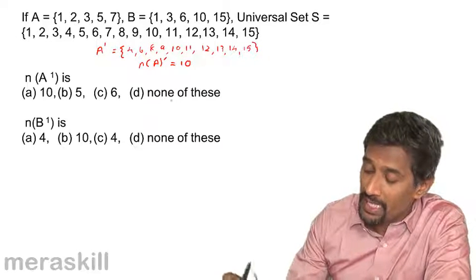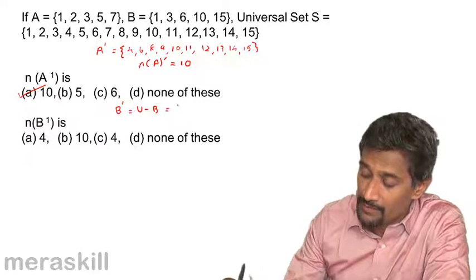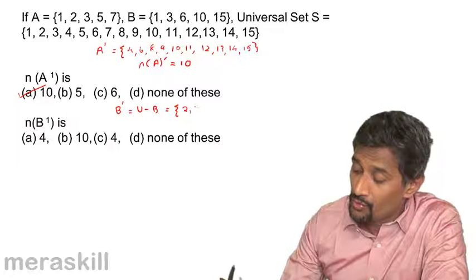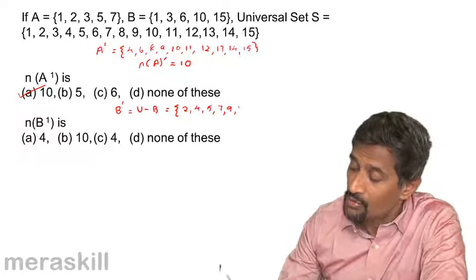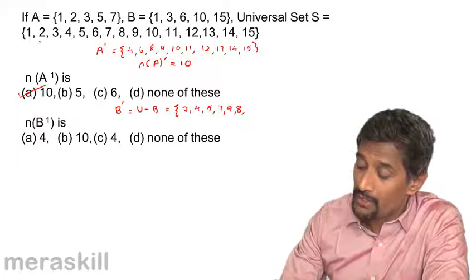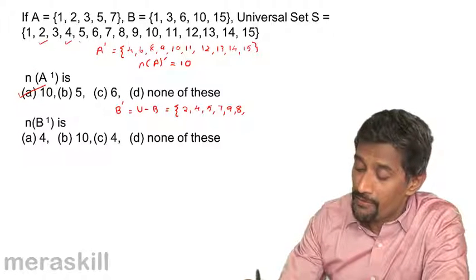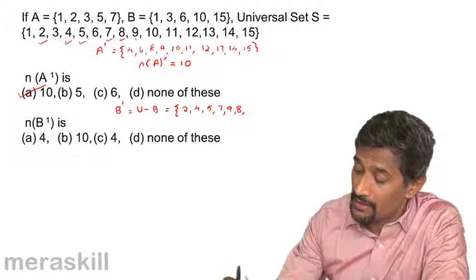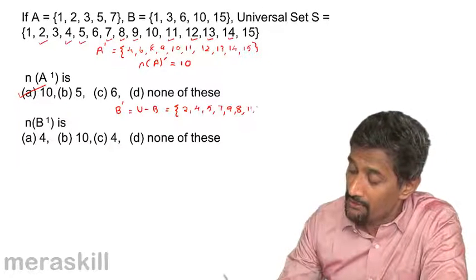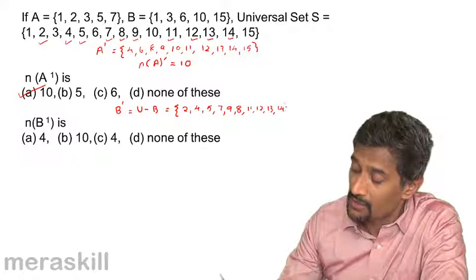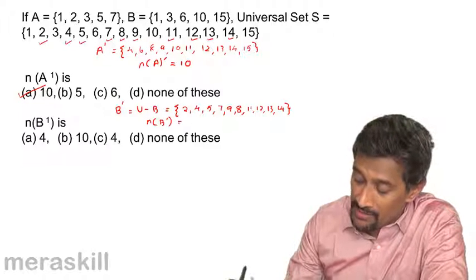Similarly, if you look at B dash which is going to be U minus B. It will contain 2, 4, 5, 7, 9 and also 8. So if you look at it, 1, 3, 6, 10, 15 are present in B. So 2, 4, 5, 7, 8, 9 and then 11, 12, 13, 14. So you have 11, 12, 13 and 14. So that is 1, 2, 3, 4, 5, 6, 7, 8, 9, 10. So the n of B dash is also 10.